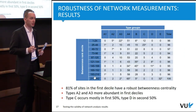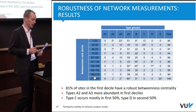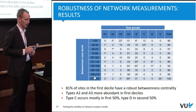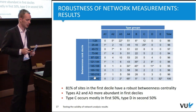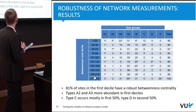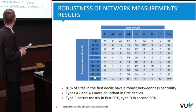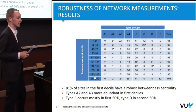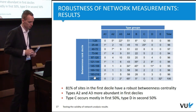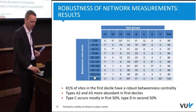Looking at the top decile in terms of betweenness ranks — the 24 most important sites — up to 81% have a robust betweenness centrality. Types A2 and A3 are much more prevalent in the first few deciles, and significantly more abundant in some of them as indicated by an asterisk. Type C is more prevalent in the top half, and type D is more prevalent in the lower deciles, telling us something about the distribution of types among sites.